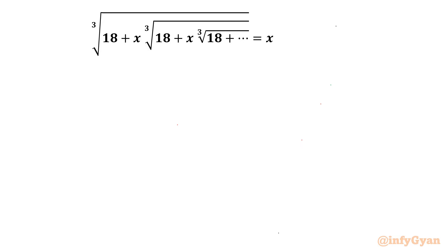Welcome back to InfiGyan friends. In this video we are going to take up one very interesting and challenging nested radical equation problem. The equation is: cube root of 18 plus x times cube root of 18 plus x times cube root of 18, plus up to infinity, equal to x. We have to find out real x.